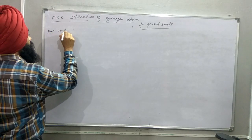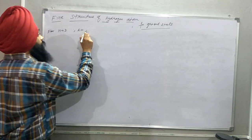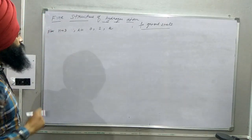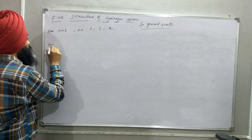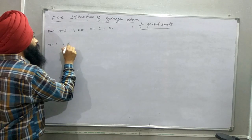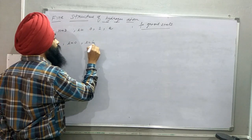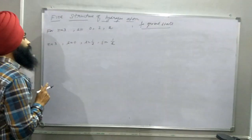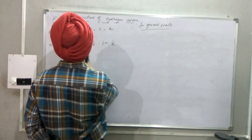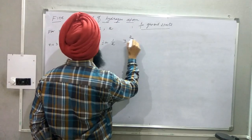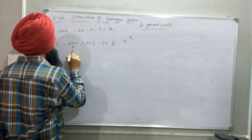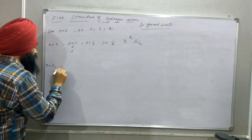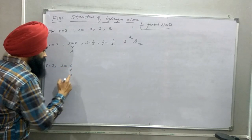For n equal to 3, the values of l go from 0 to n minus 1, that is 0, 1, and 2. For n equal to 3, l equal to 0, the subshell is s, spin s is half, and j equals 0 plus half equals half. So the term value is 3, 2s, half. For n equal to 3, l equal to 1, the subshell is p.